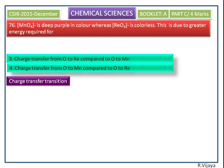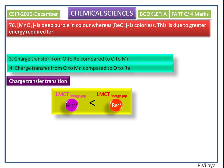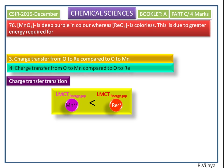We should not confuse with the electron transfer. The correct answer is greater energy required for charge transfer from oxygen to rhenium compared to oxygen to manganese. So the correct answer is the third option: charge transfer from oxygen to rhenium compared to oxygen to manganese.